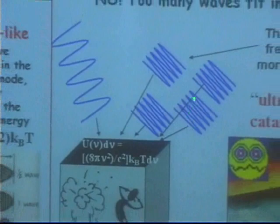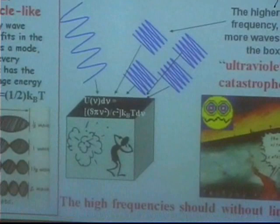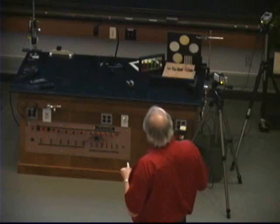Physicists tried to understand this from the point of view of only waves. The problem was that if light is waves of different colors, using something called modes, you can stuff a lot more blue modes in than red, because the wavelength is much smaller. When they did these calculations, they found something called the ultraviolet catastrophe — the theory predicted that as wavelength got shorter, intensity would go to infinity. The waves theory didn't work.